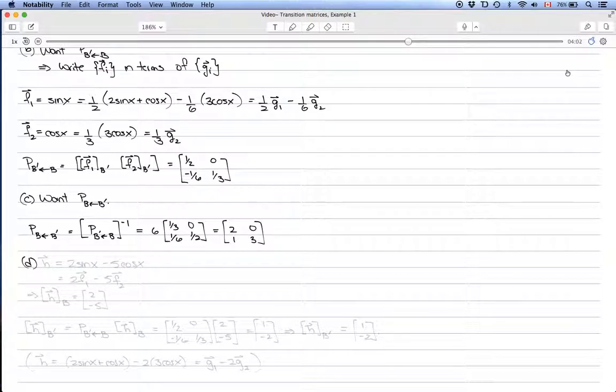In part D, we're given the vector h equals 2 sin x minus 5 cos x. We want to calculate the coordinate vectors in terms of the basis B and B prime. In terms of the basis B, this is relatively simple.